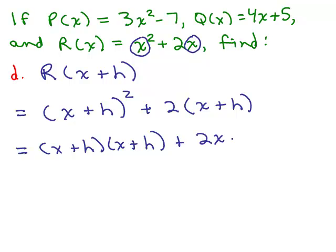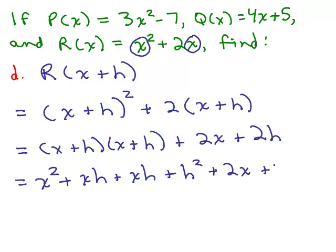And I could go ahead and do my distributive property now or later. And let's do the FOIL method here. Here you have x² + xh + xh + h² + 2x + 2h.